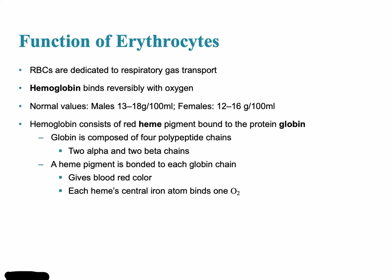The function of erythrocytes is primarily for respiratory gas transport. They do this by using the protein-based molecule called hemoglobin, found within all red blood cells. The normal hemoglobin amount in males should be 13 to 18 grams per 100 milliliters of blood, and a little lower for females.